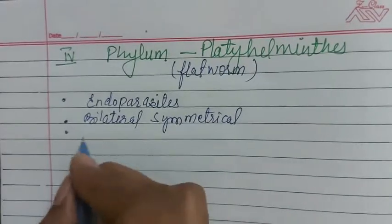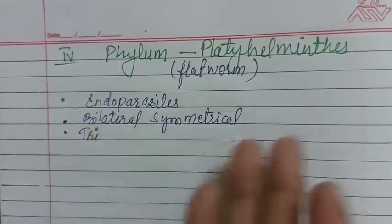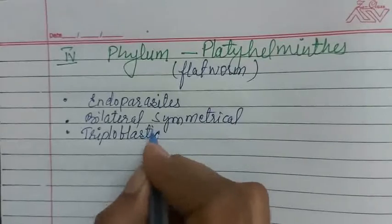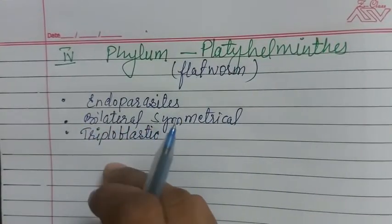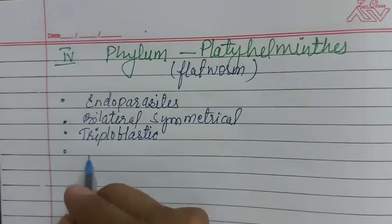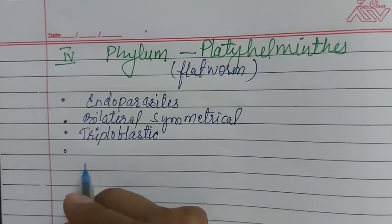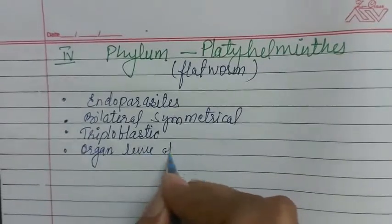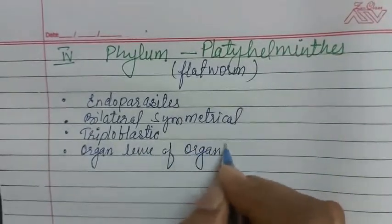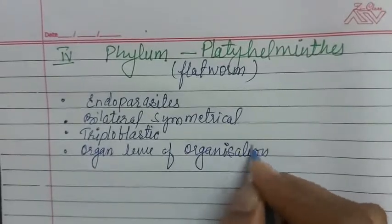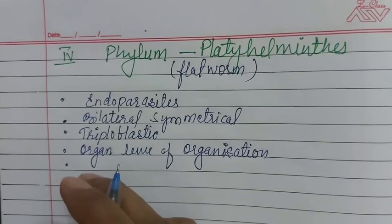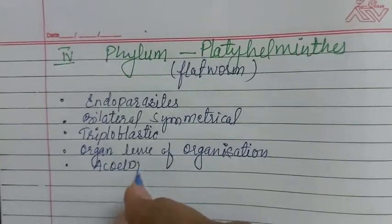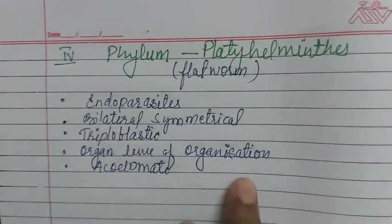On the basis of embryonic layer, Platyhelminthes are triploblastic — they have three embryonic layers. On the basis of body organization, they are at the organ level of organization. When we talk about coelom, coelom is absent in them — so they are acoelomate organisms.